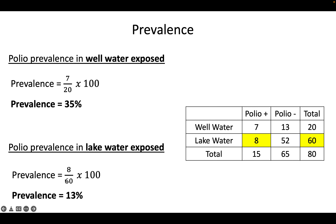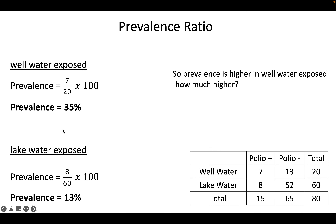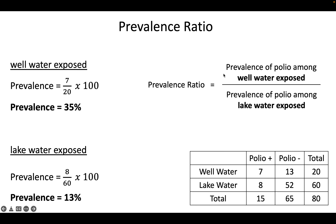We can now see that the prevalence of polio in those who drink well water is actually much higher. It would be nice to combine these values into a single measure of effect — and that's the prevalence ratio. It doesn't really matter which group goes in the numerator and denominator, but generally whatever you consider exposure-positive goes on top. So we put the prevalence of polio in the well-water-drinking population on top, and the prevalence in lake-water drinkers on the bottom: 0.35 divided by 0.13.